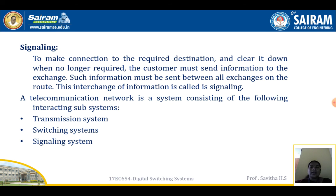Signaling: to make a connection to the required destination and to clear it down when no longer required, the customer must send information to the exchange. Such information must also be sent between all the exchanges on the route. This interchange of information is called signaling. A telecommunication network is a system consisting of the following interacting subsystems: transmission system, switching system, and signaling system.